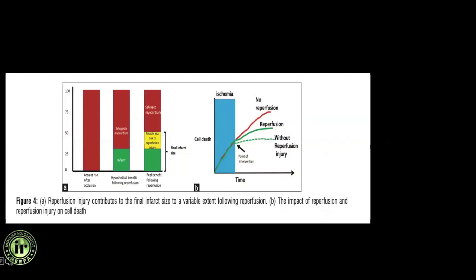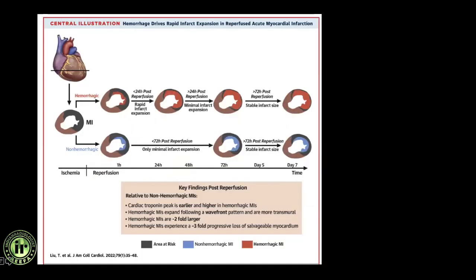Another article shows how reperfusion imaging works. After occlusion, there is an area at risk and a hypothetical benefit — that following reperfusion, there would be salvageable myocardium and only a small infarct size. But the real benefit is less, because there will definitely be some muscle loss due to reperfusion injury. It is like a double-edged sword — sometimes the benefit without reperfusion injury would be greater than with reperfusion, because it compromises some myocardial salvage.